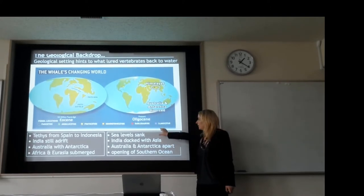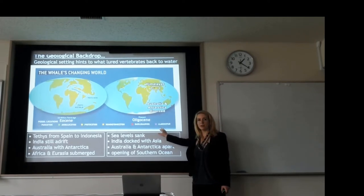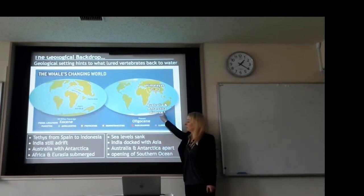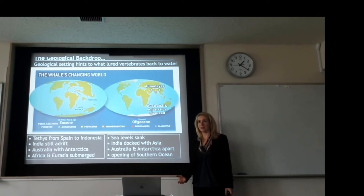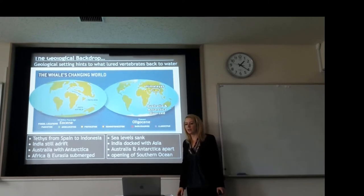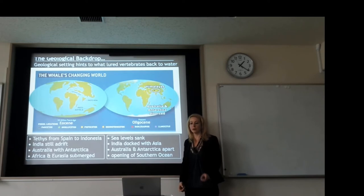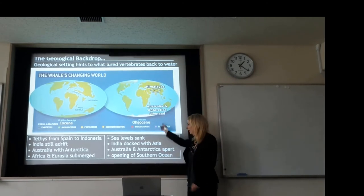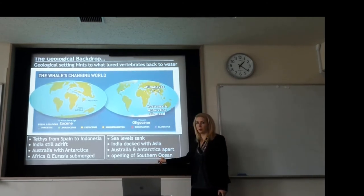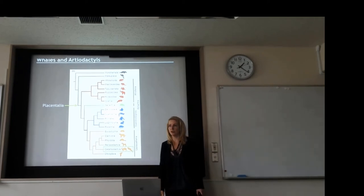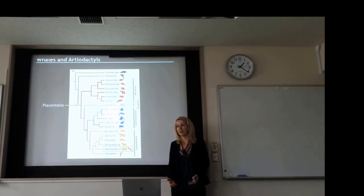A different climate system for the Oligocene brings about radical changes in the distribution, quality, and type of nutrients, opening up whole new ecological opportunities for cetaceans — the group that whales are part of. This sets the stage for the origin of modern whales, which is an Oligocene phenomenon. Toothed whales — odontocetes — and baleen whales — mysticetes — spread in the Oligocene because of the opening of the Southern Ocean and sinking sea levels.